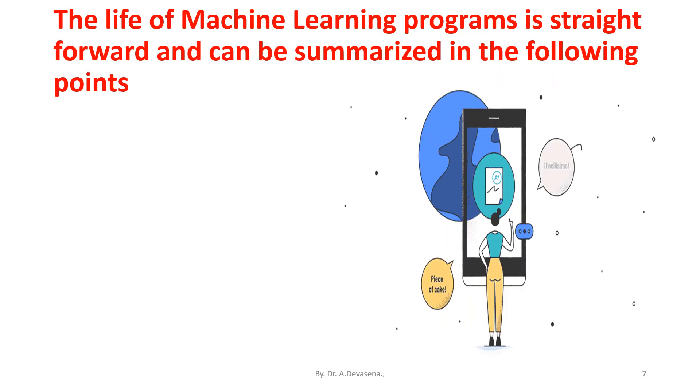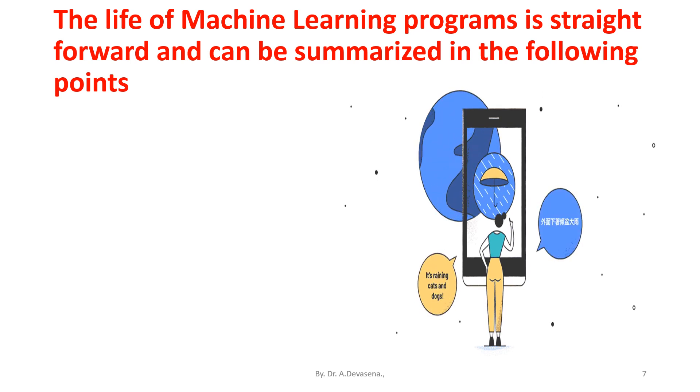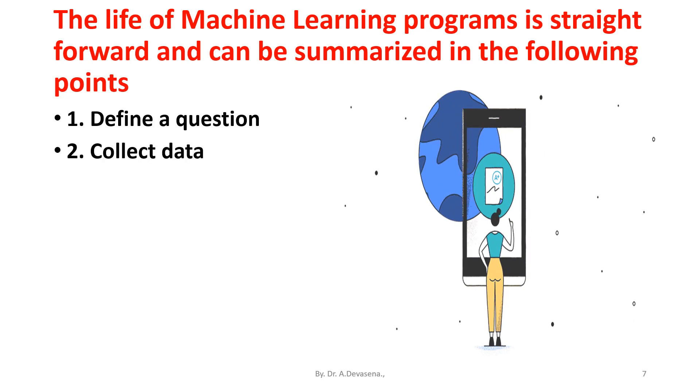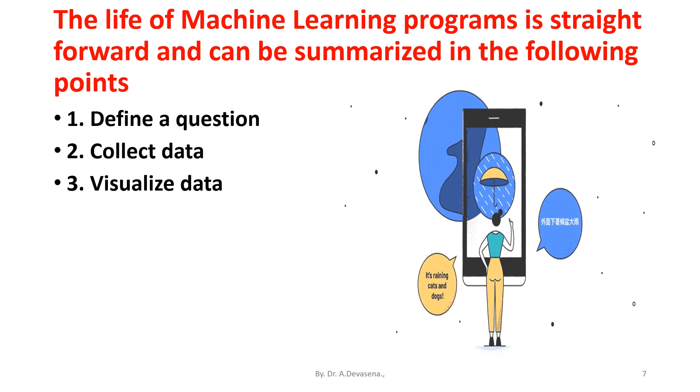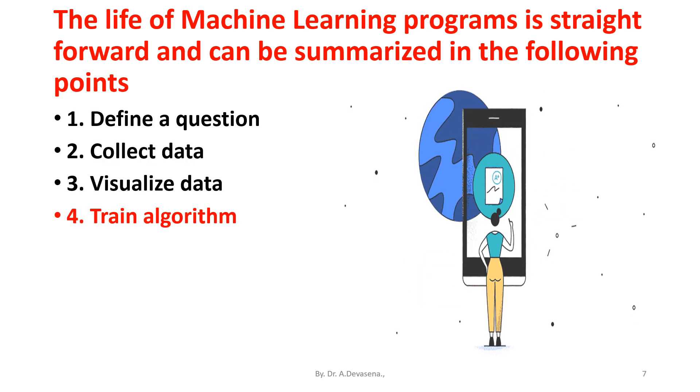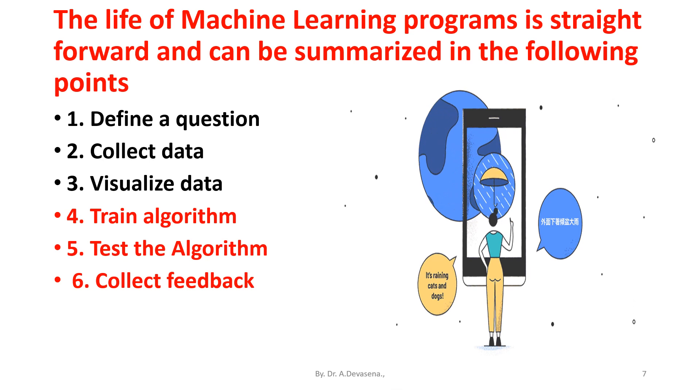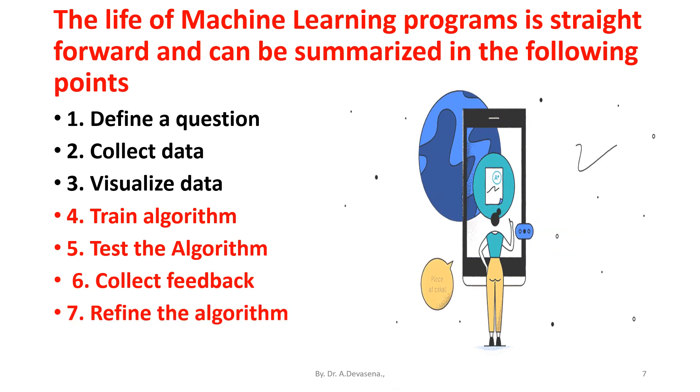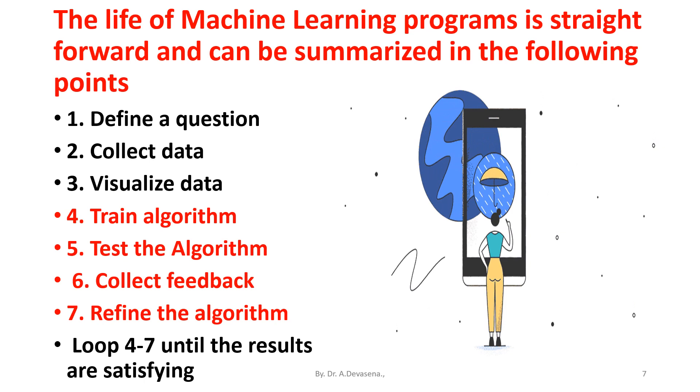The life of machine learning programs is straightforward and can be summarized in the following points: define a question, collect the data, visualize the data, training algorithm, test the algorithm, collect feedback, refine the algorithm. Machine learning loops four to seven until the results are satisfying.